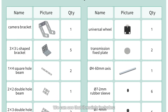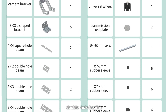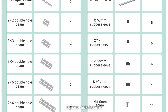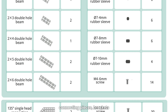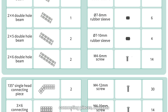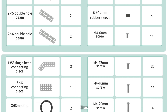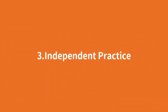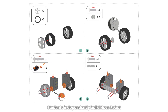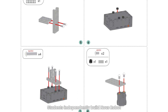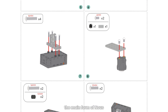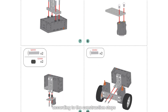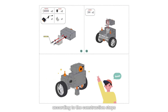The structural parts mainly include double hole beams, square hole beams, connecting pieces, brackets, tires, rubber sleeves, screws, etc. Students independently build the NAWS robot — the main form of NAWS — according to the construction steps.